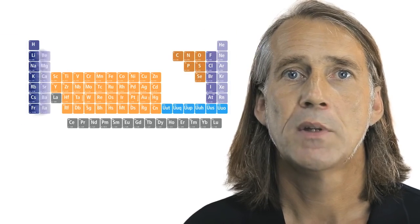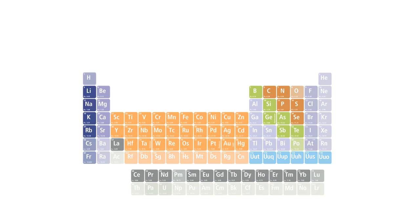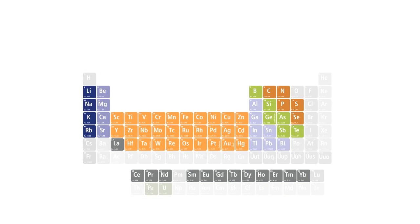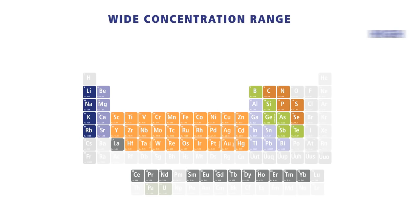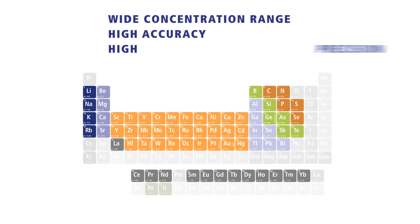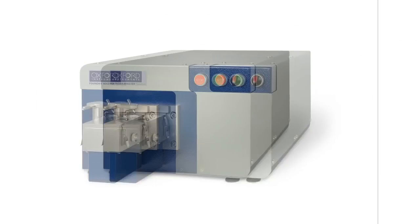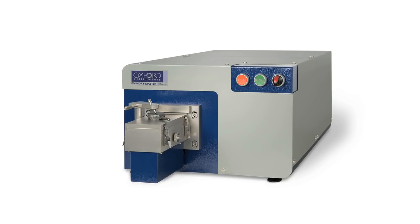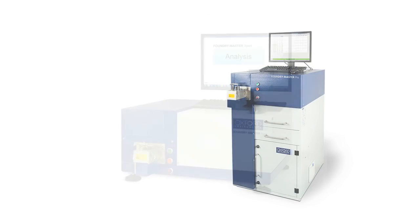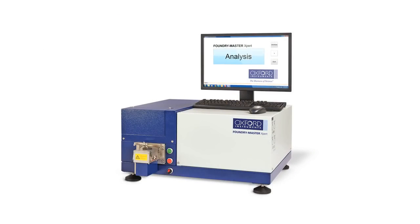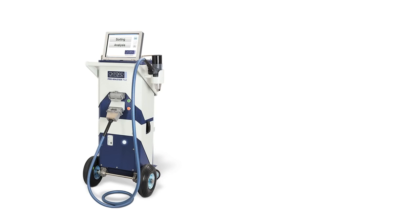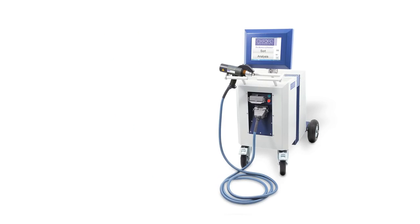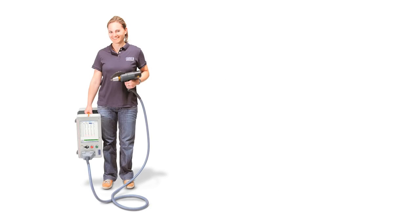OES can analyze a wide range of elements from lithium to uranium in solid metallic samples, covering a wide concentration range and giving very high accuracy, high precision and low detection limits. The elements and concentrations that OES analyzers can determine depend on the material being tested and the type of analyzer used.